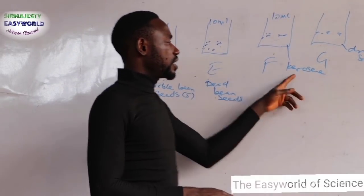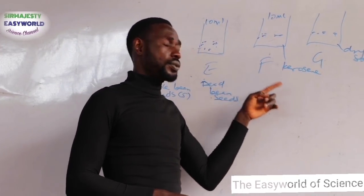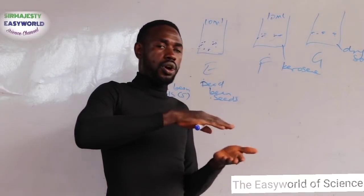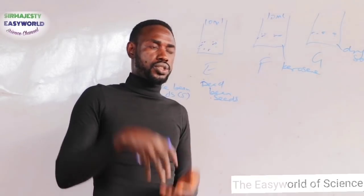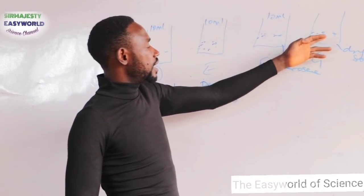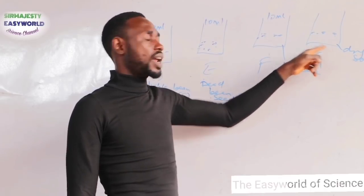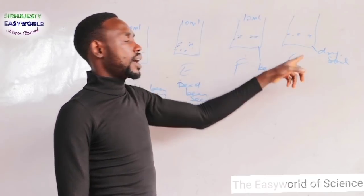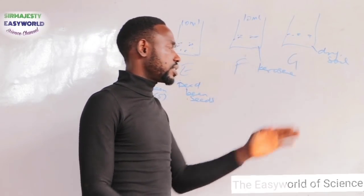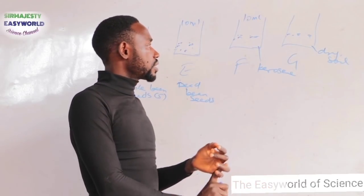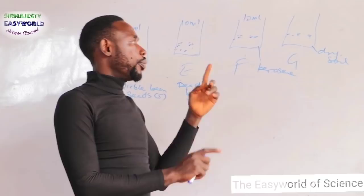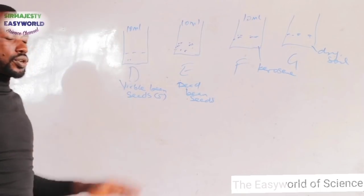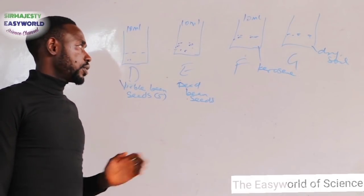In F, the kerosene is to exclude air, trying to tell you the factor of oxygen. So this bean seed here will never germinate because the kerosene you poured on top of the soil excludes oxygen, and without oxygen there will be no germination. In G, the seed will not germinate because there is no water. But in beaker D, every condition is satisfied, so there is going to be complete germination.